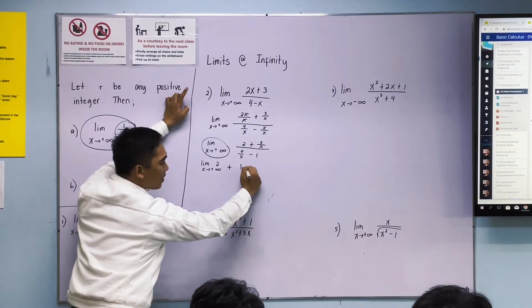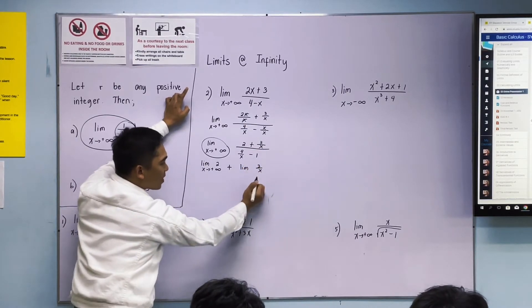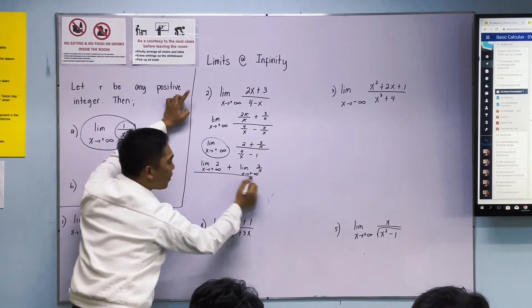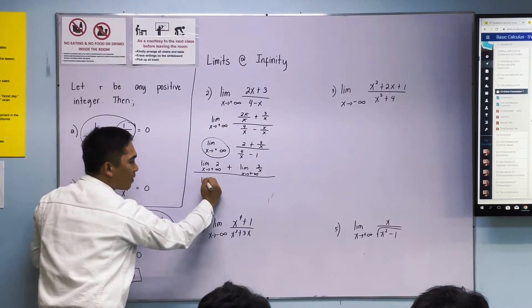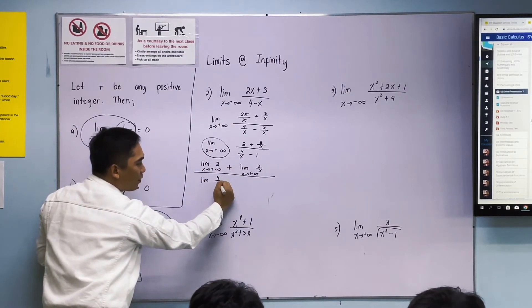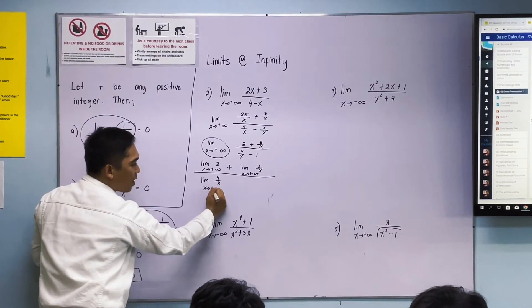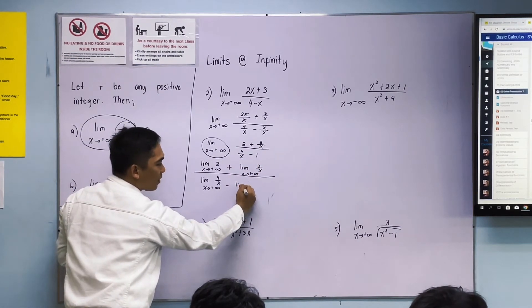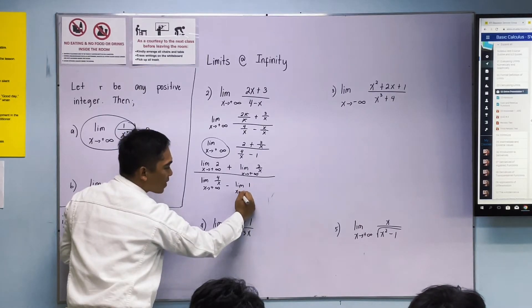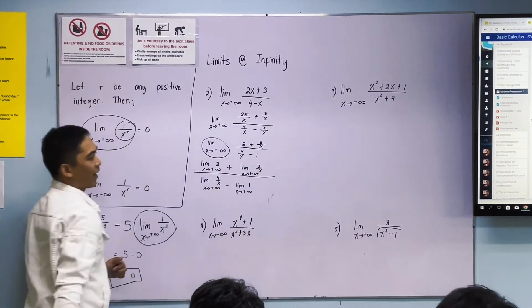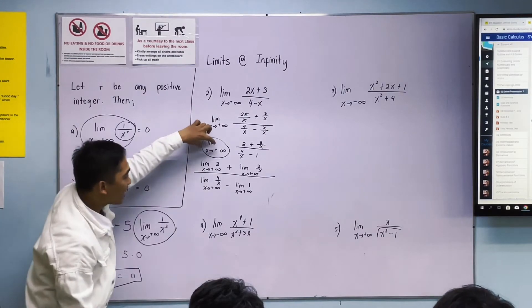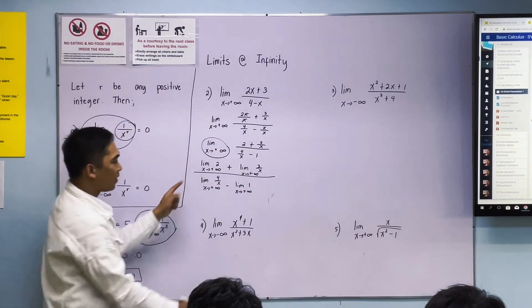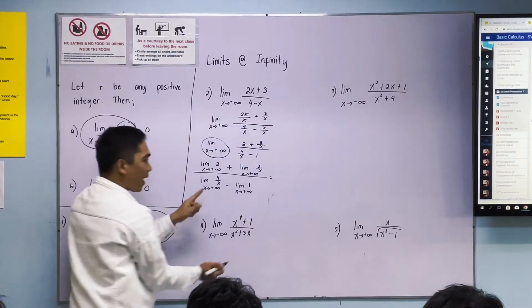In this case, we'll put the limit on each term so we can use the theorems we discussed. We'll just distribute. This will become: limit of 2 as x approaches positive infinity plus limit of 3 over x as x approaches positive infinity over limit of 4 over x as x approaches positive infinity minus limit of 1 as x approaches positive infinity. It's a bit long. We just put it in front of each term.